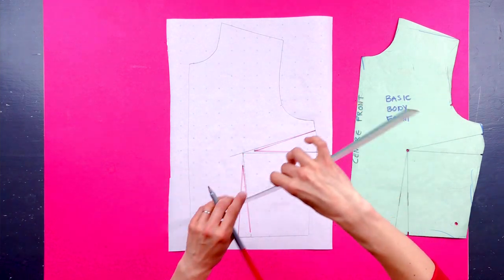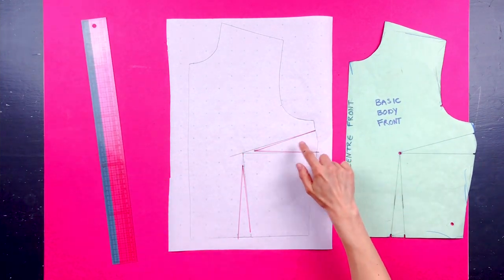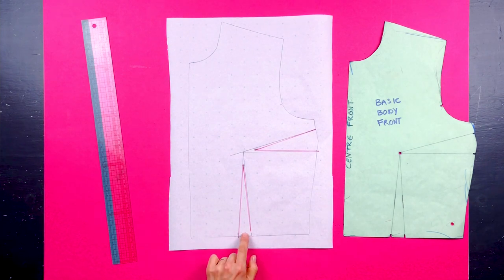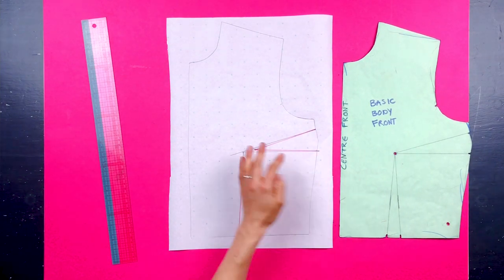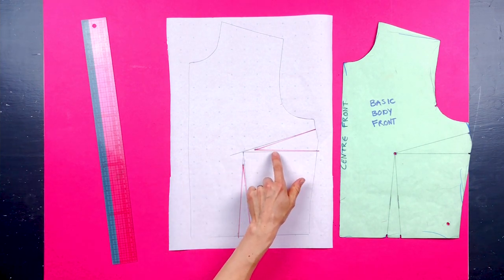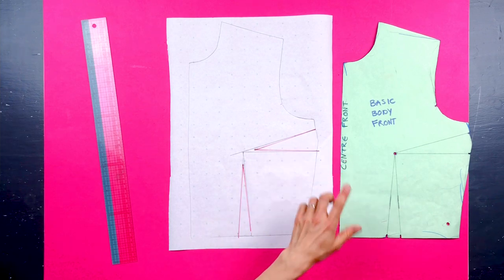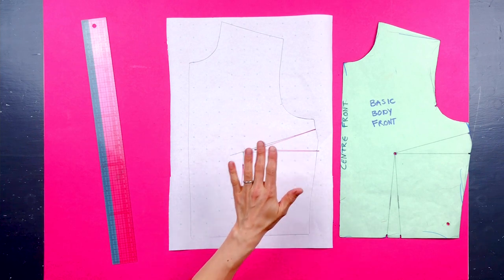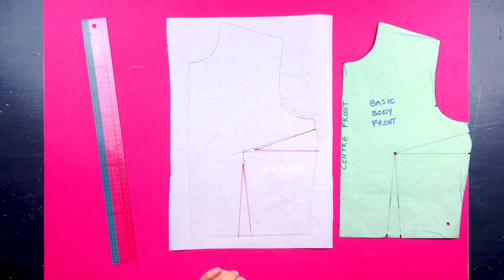That just gives you a much more flattering line because you don't want a pointy bust, whatever you do, unless you're Madonna wearing Jean Paul Gaultier. But in general, this will give you a really flattering bust point. You can see the darts are still the same width where they start off, but they just become a bit shorter. So you have to be really careful you still get a lovely edge. So you might have to slightly dart in and then move out so you get a lovely flattering bust line rather than a pointy bust line.